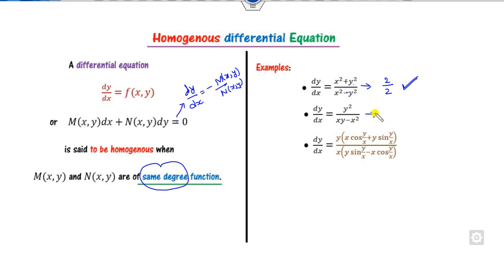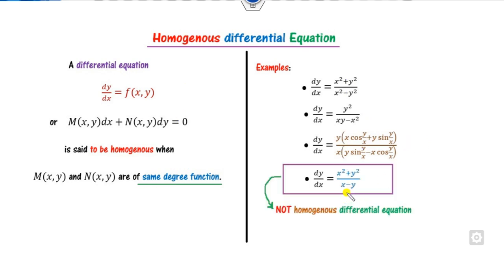Is it homogeneous? Yes — degree 2 and 2. Another example: degree 1 and 1, also homogeneous. But if you look at this example, x squared has degree 2 while the other term has degree 1 — it is not homogeneous. Make sure you are checking the complete differential equation.